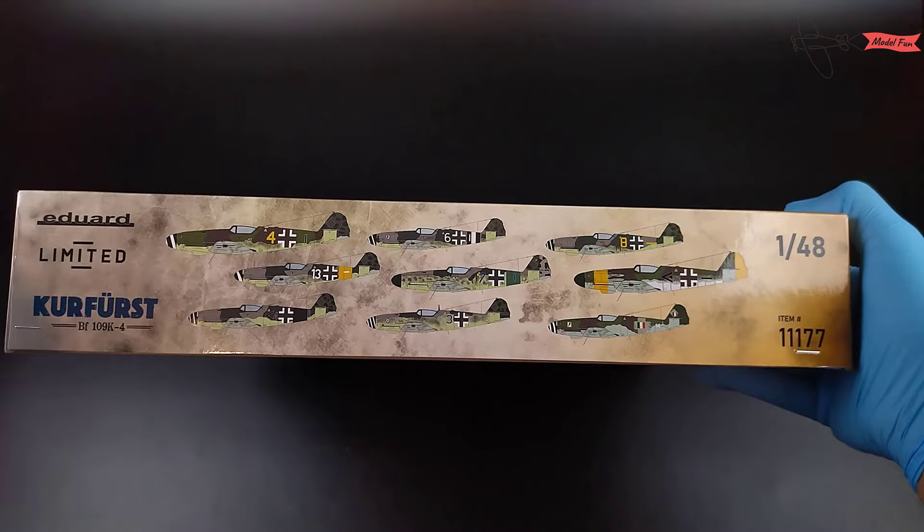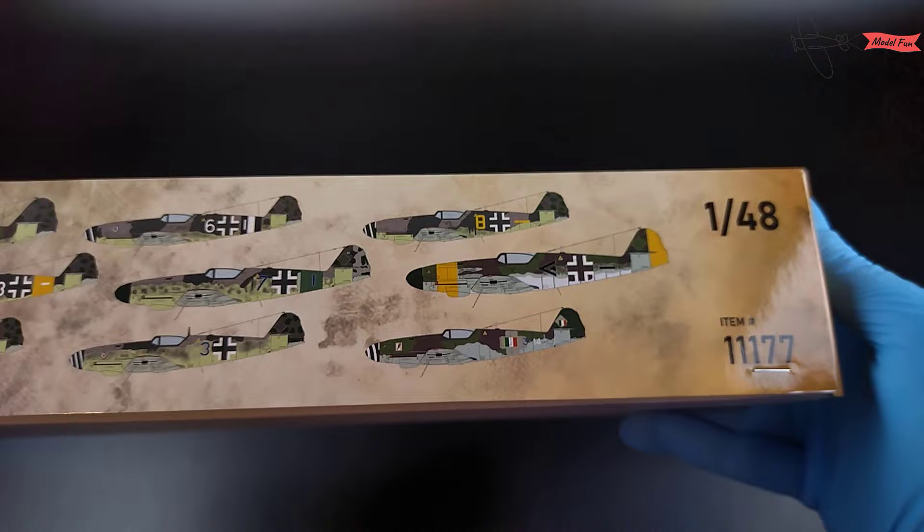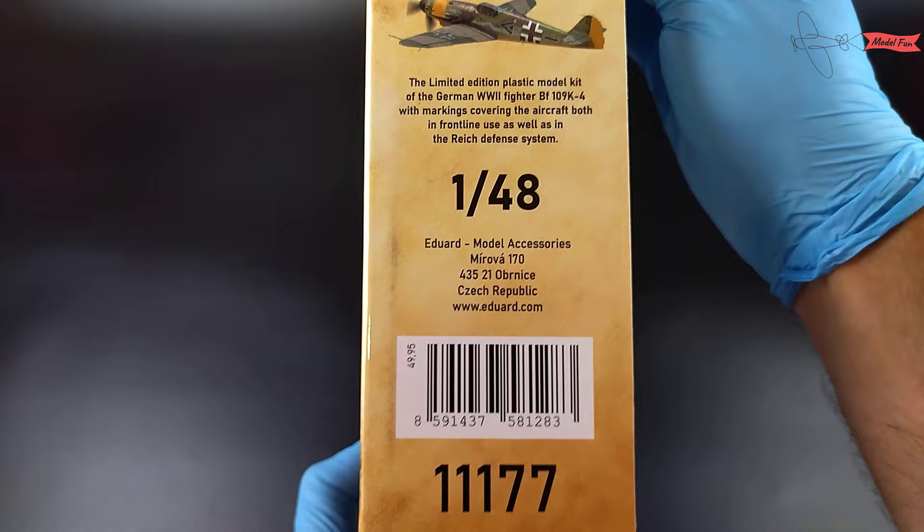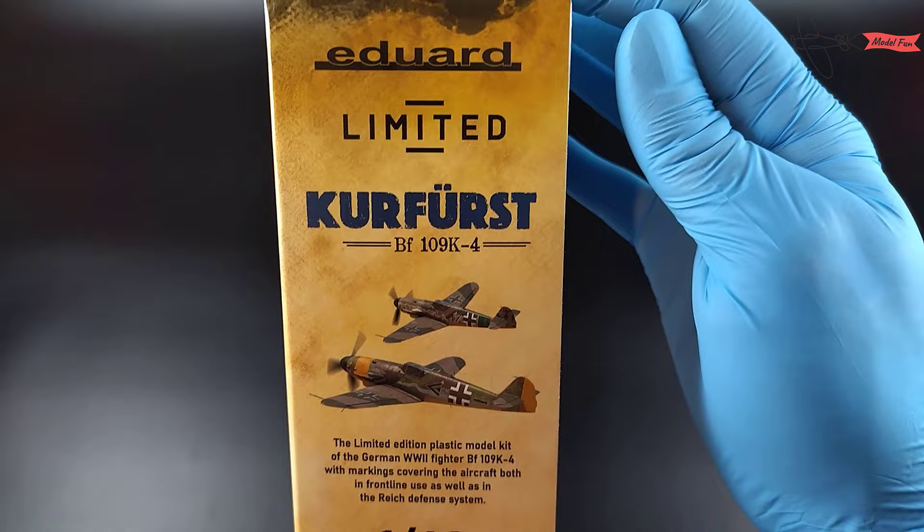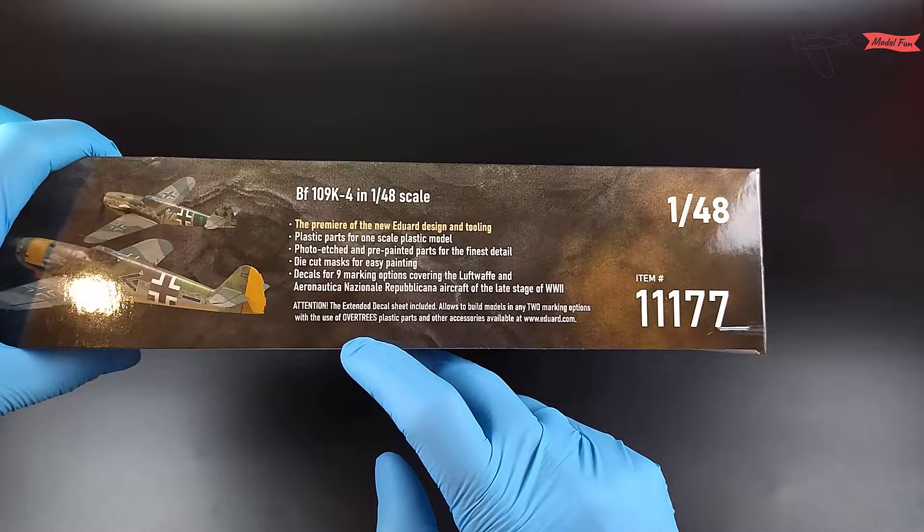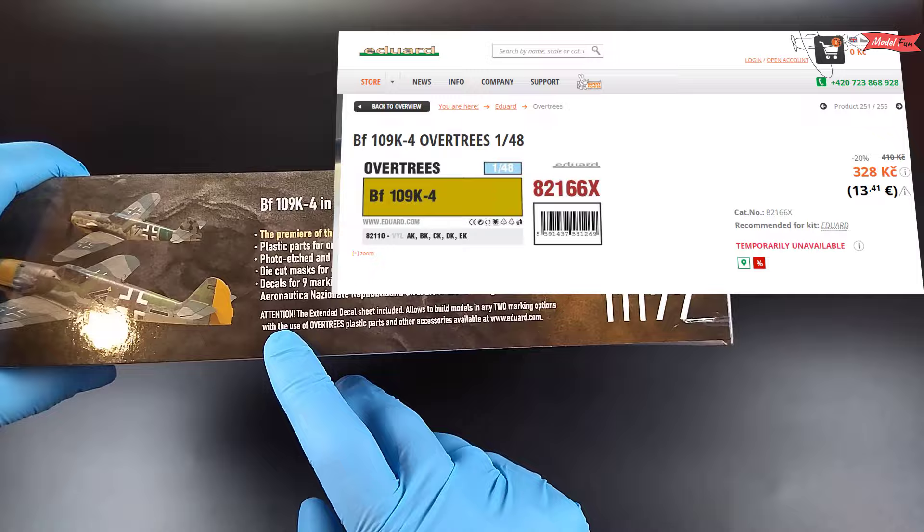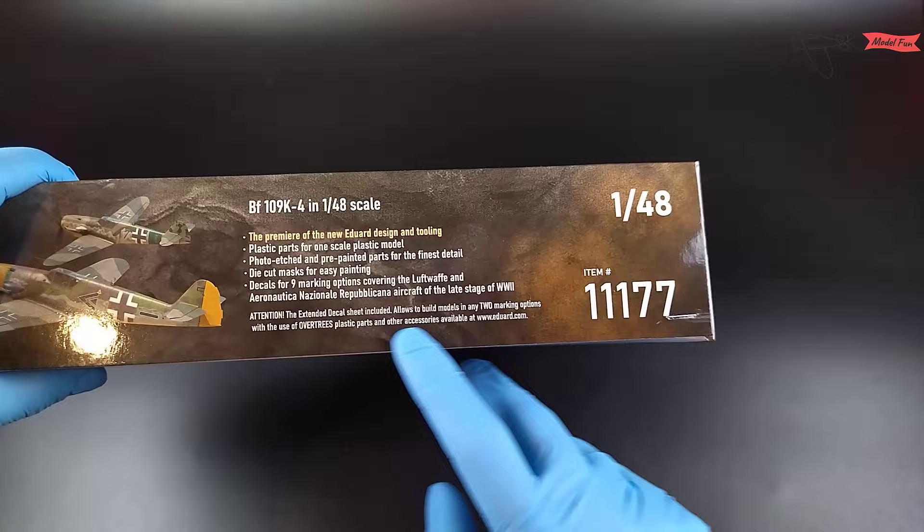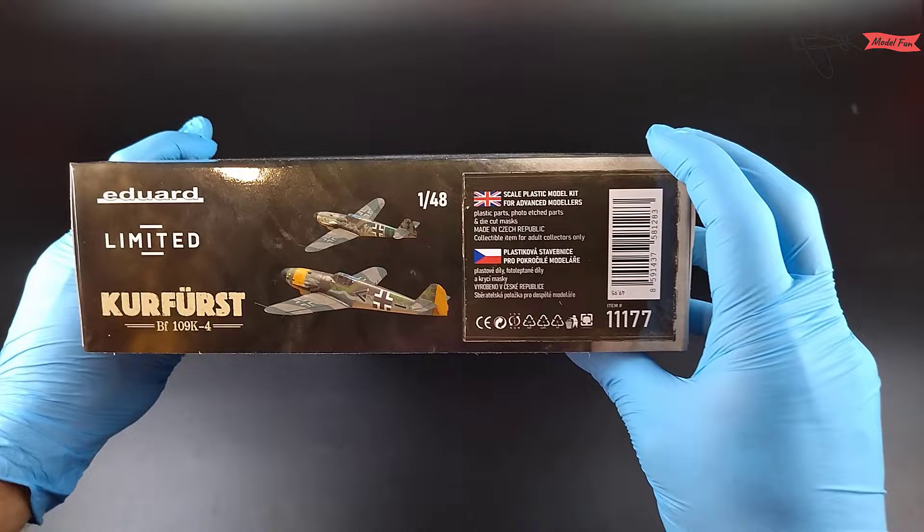There are nine painting options. This kit contains plastic parts for one model, but the included decal sheet has the common decals printed two times. So if you want to build another BF109, you can buy an Overtrees edition of it. Overtrees has nothing more than plastic parts and costs 50% less than the complete kit. Combined with the decals from this set, we can build another BF109.